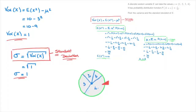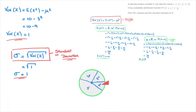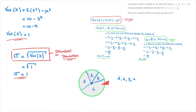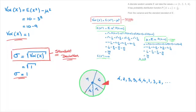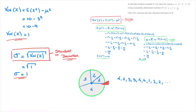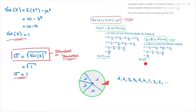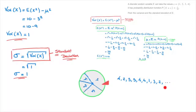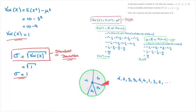If we repeat this experiment a large number of times and record the result each time, we'd get a list of numbers like 4, 2, 3, 3, 4, 4, 1, 3, 2, and so on. The mean mu = 3 tells us that the average of all these values would get close to 3, and the more trials we do, the closer to 3 that average would be.